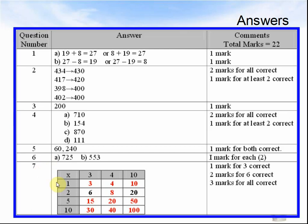Question 7. 1 times 3 is 3. 1 times 4 is 4. 1 times 10 is 10. 2 times 3 is 6. 2 times 4 is 8. 2 times 10 is 20. 5 times 3 is 15. 5 times 4 is 20. 5 times 10 is 50. 10 times 3 is 30. 10 times 4 is 40. 10 times 10 is 100.